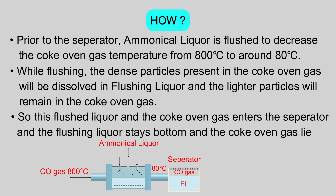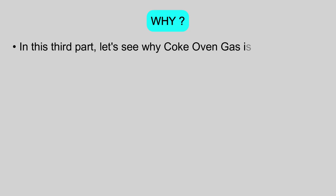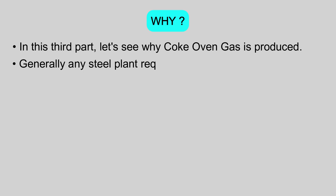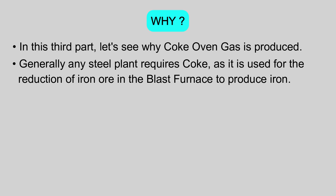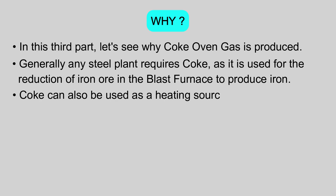In this third part, let's see why coke oven gas is produced. Generally, any steel plant requires coke as it is used for the reduction of iron ore in the blast furnace to produce iron. Coke can also be used as a heating source as it has high calorific value.